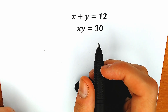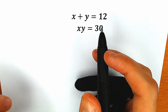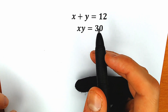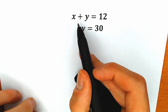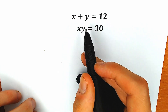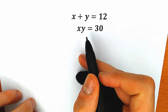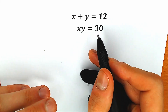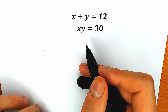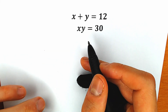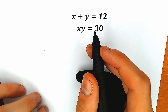Hello my friend. Happy to see you here. Welcome back to my channel. Today we have a really interesting, tricky algebra question. We know that the sum x plus y equals 12 and the product xy equals 30. We need to solve this question for x and y. If you're interested, you can solve this question with me right now and then we will check our answers.